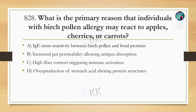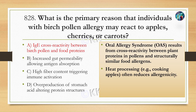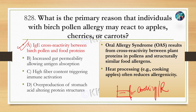The correct option is A — IgE cross-reactivity between birch pollen and food proteins. यह oral allergy syndrome होता है, OAS, यह mainly होता है cross-reactivity के वजह से between plant proteins and pollens, they are basically structurally similar to food allergens. इसको कम करने के लिए heat processing जैसे cooking of apple से allergenicity कम हो जाता है।